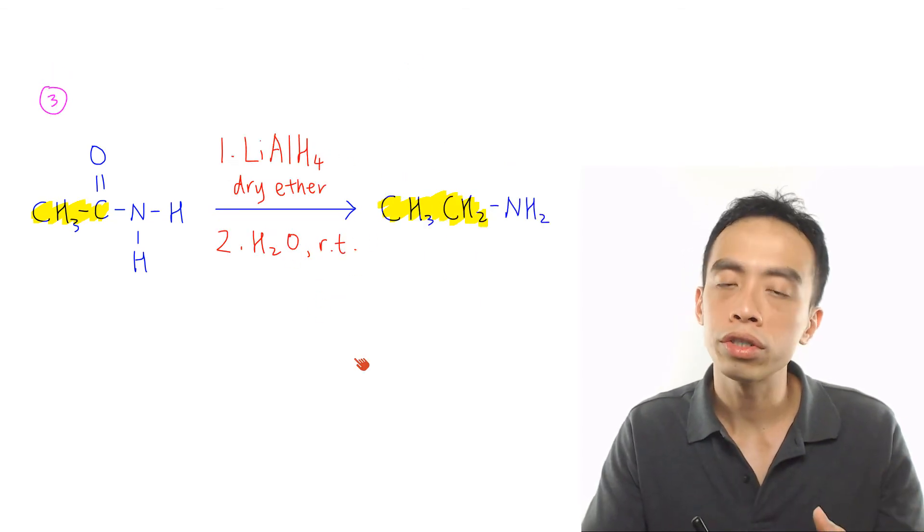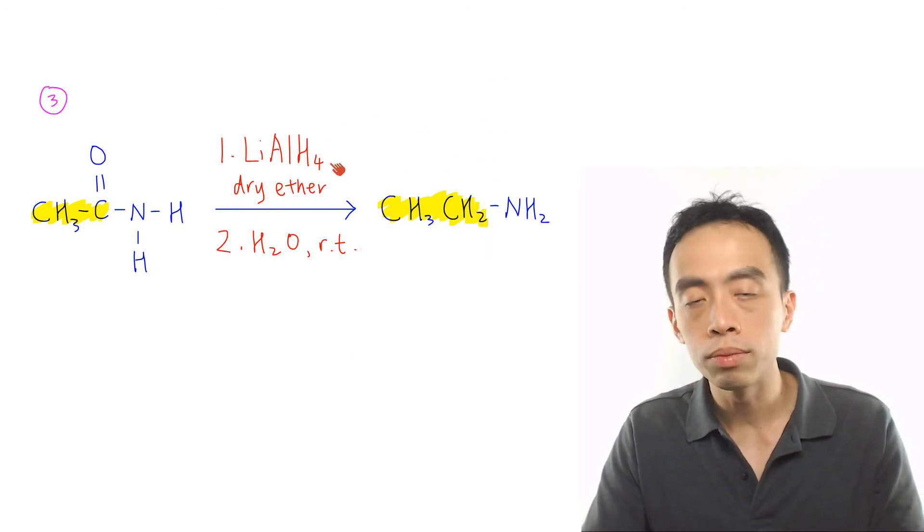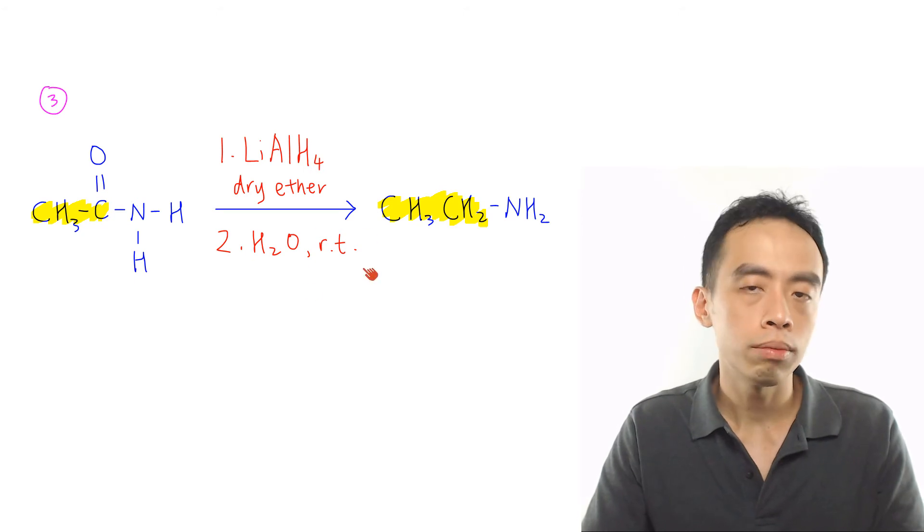Final reaction of amide is the reduction to form amines. This is done using lithium aluminium hydride in dry ether, followed by water at room temperature. Now that we have gone through the 3 reactions of amine, 3 reactions of phenyl amine, and 3 reactions of amides, how many of these reactions can you remember?